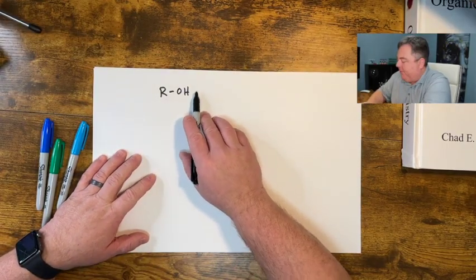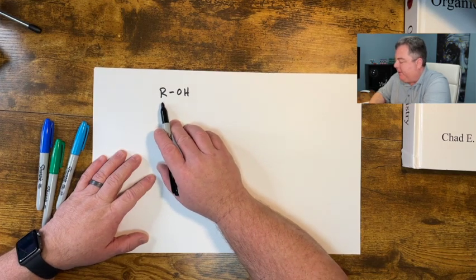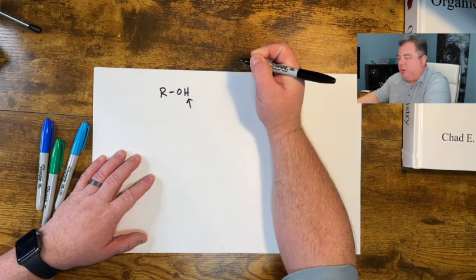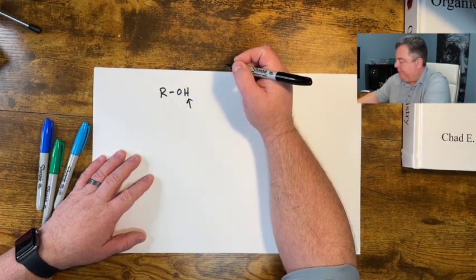If we have an alcohol, any kind of hydroxyl group on a carbon system, we might want to pull off this H plus, this proton.